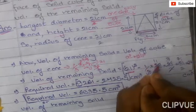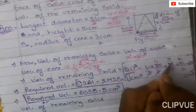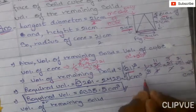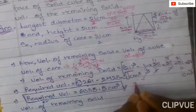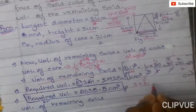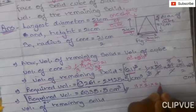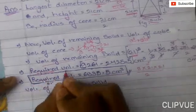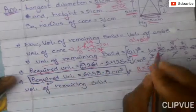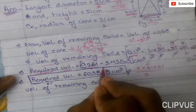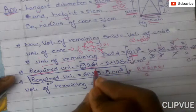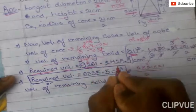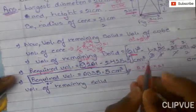The volume of the remaining solid equals volume of cube minus (1/3)πr²h. So it is 21³ minus (1/3) × (22/7) × (21/2) × (21/2) × 21. Now, 21³ equals 9261, since 21 × 21 = 441 and 441 × 21 = 9261.